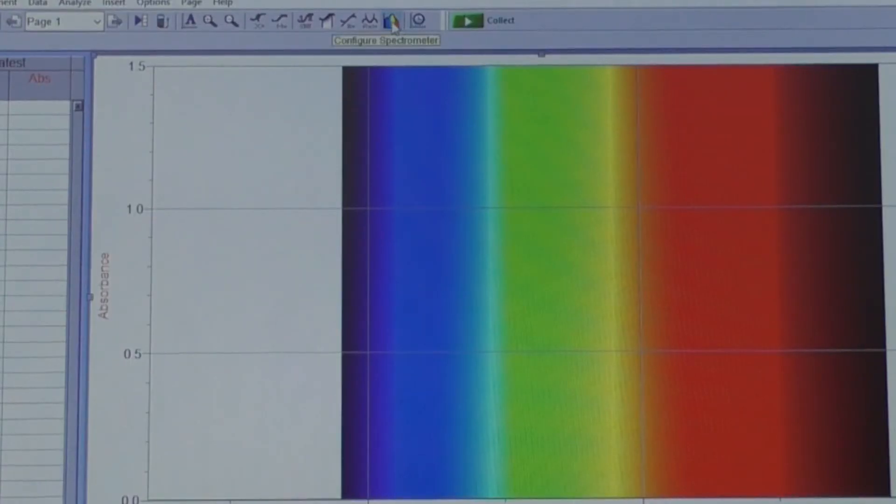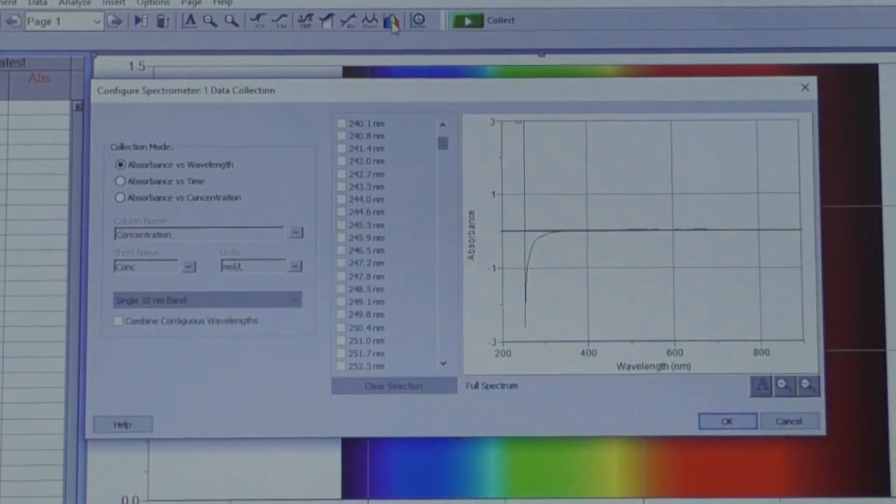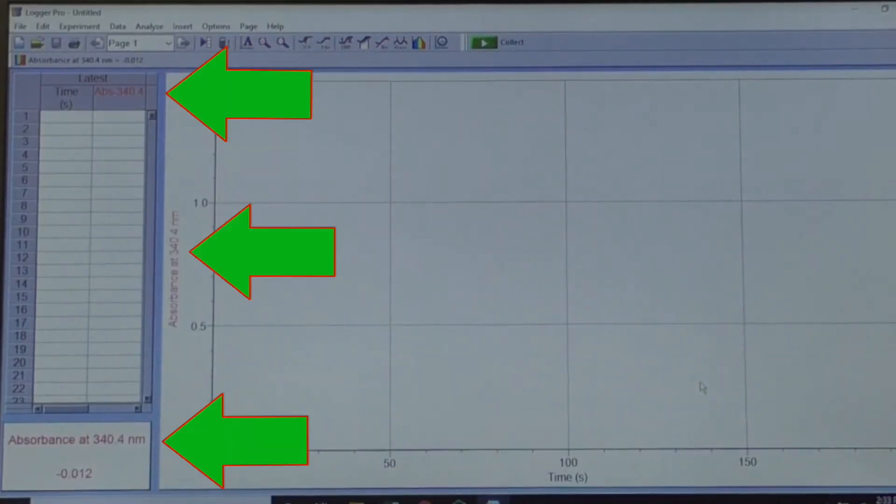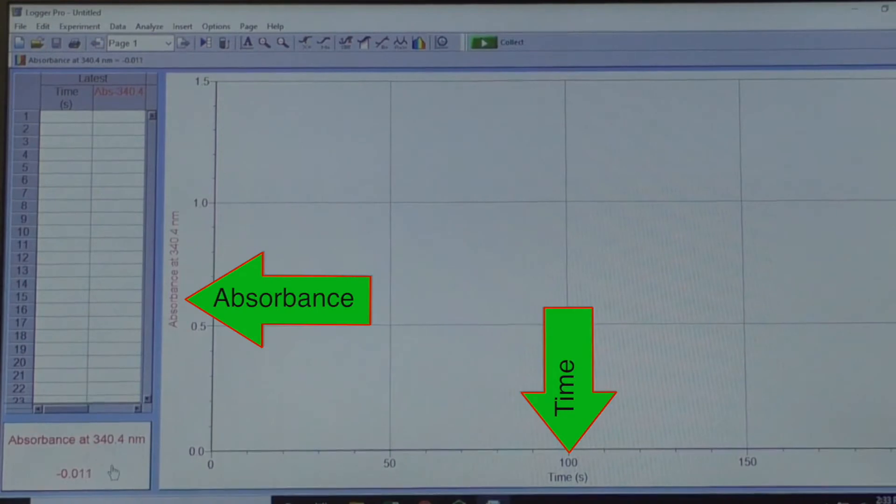To set up Logger Pro to capture absorbance over time, click the rainbow icon in the toolbar at the top. The Configure Spectrometer window will open. Under Collection Mode, select Absorbance versus Time. Next, choose your wavelength, which is 340 nanometers, or whatever number is closest to that, in the scroll down area. Click OK. You should now see the wavelength listed in these three spots. Notice that the rainbow background has disappeared and your axes are now absorbance and time.